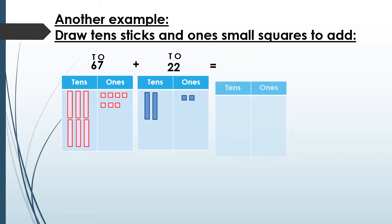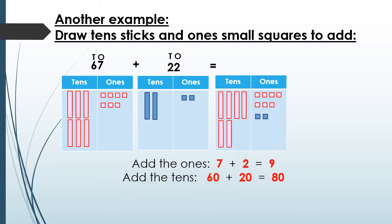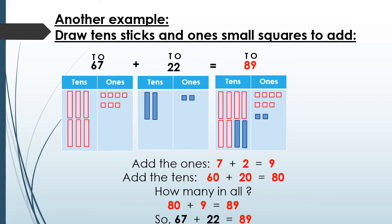In 22, I have two sticks in the tens and two squares in the ones. Now I'm gonna add the ones: 7 plus 2 equals 9. I'm gonna add the tens: 60 plus 20 equals 80. Using these two answers together: 80 plus 9 equals 89. So 67 plus 22 equals 89.